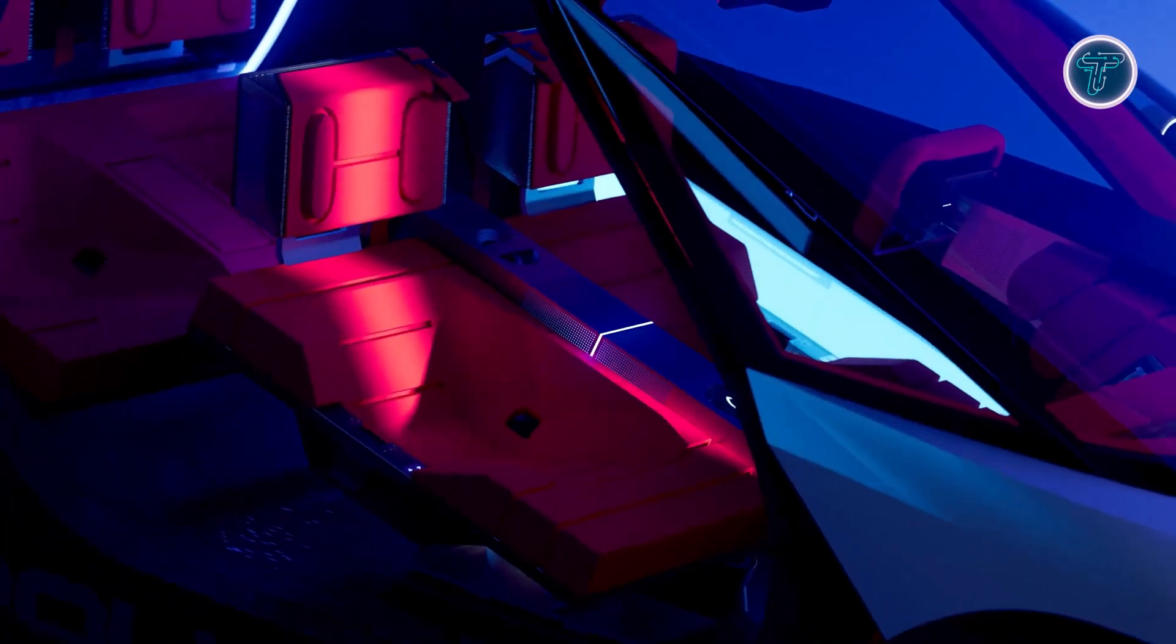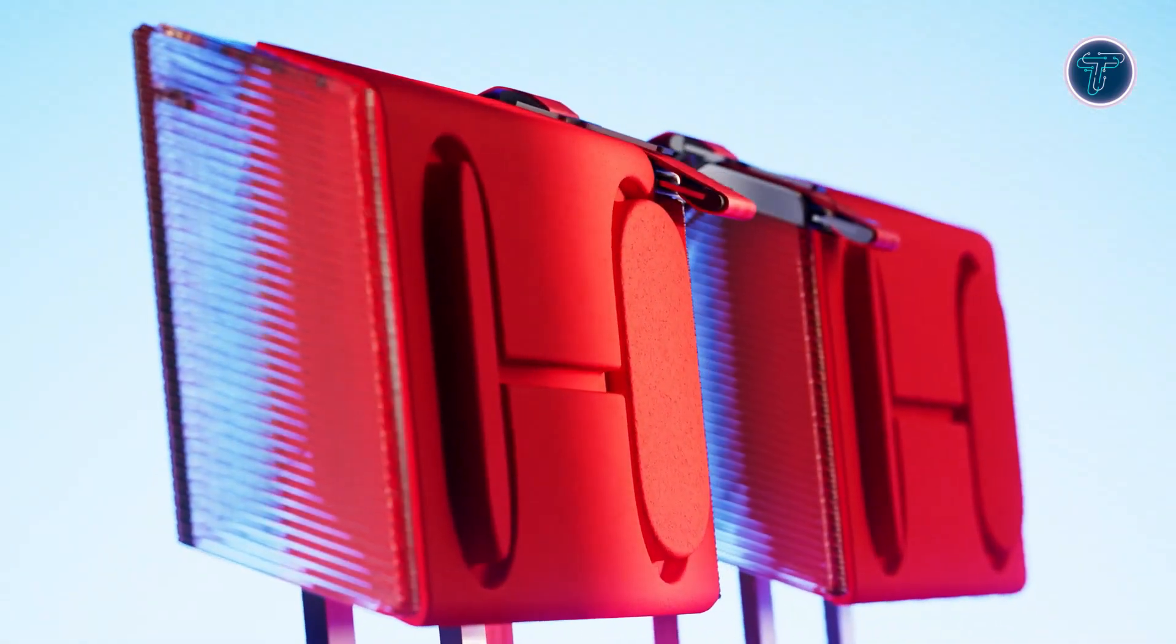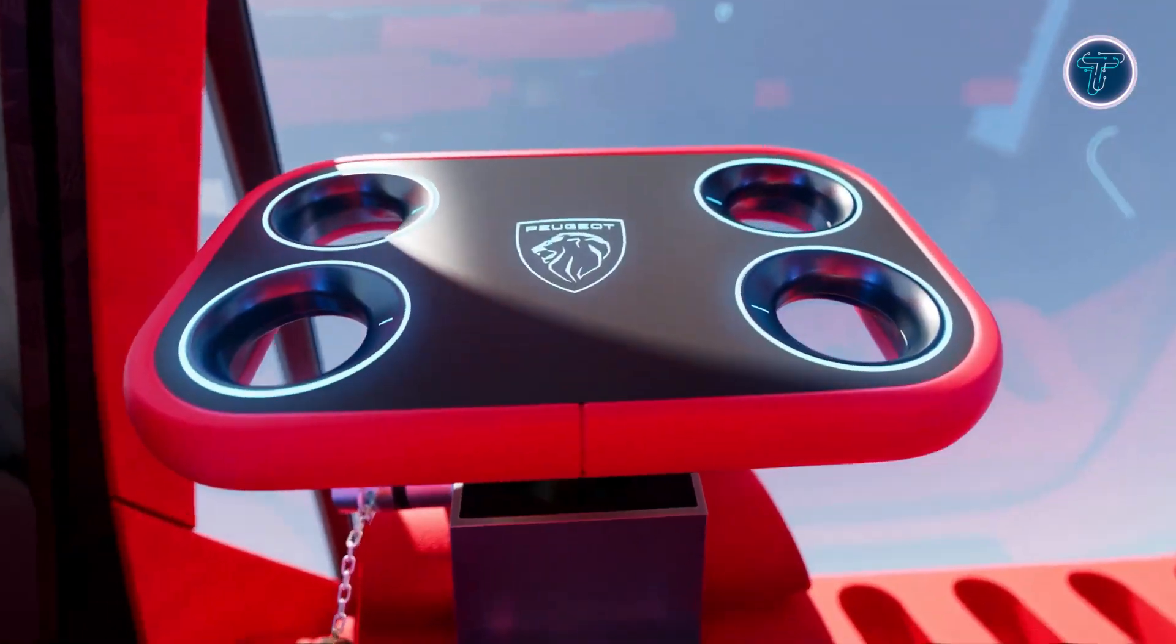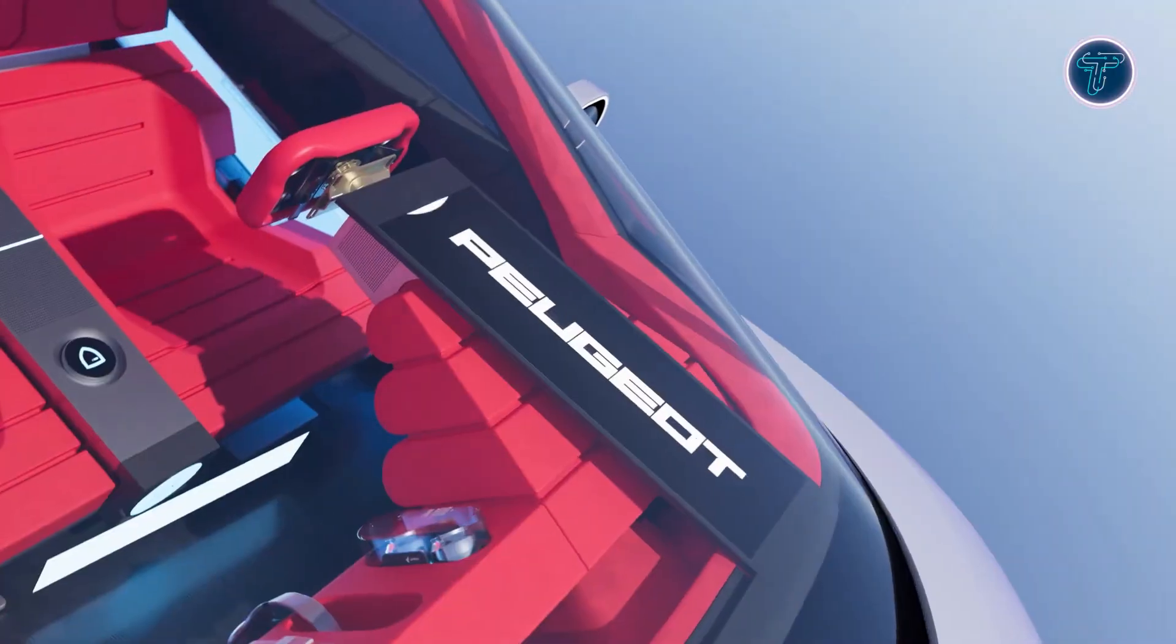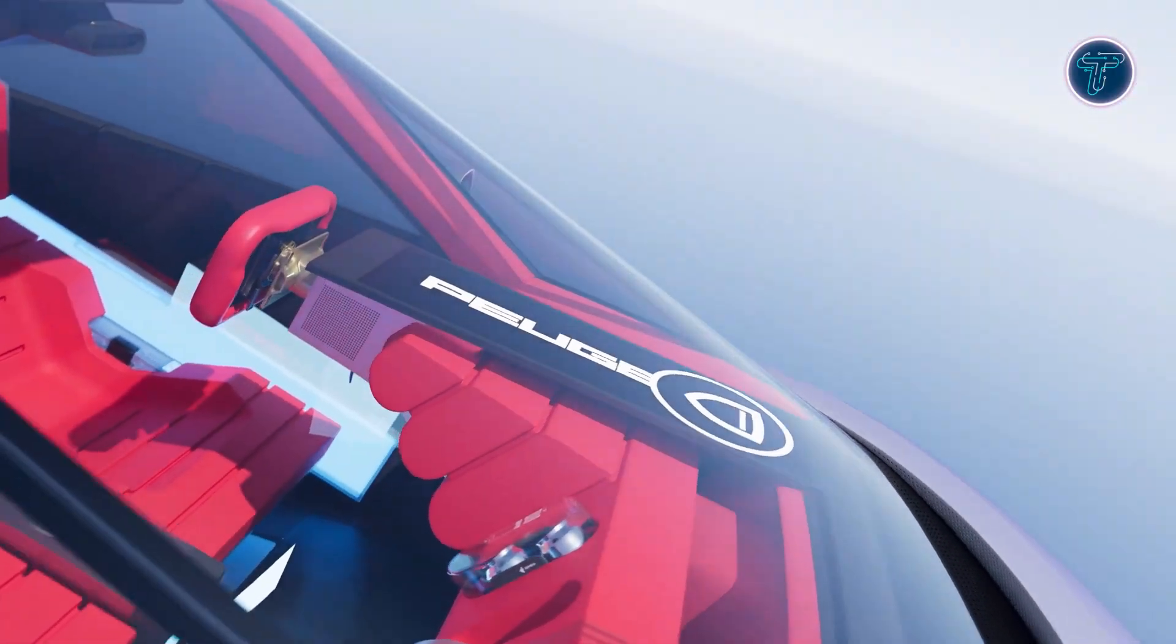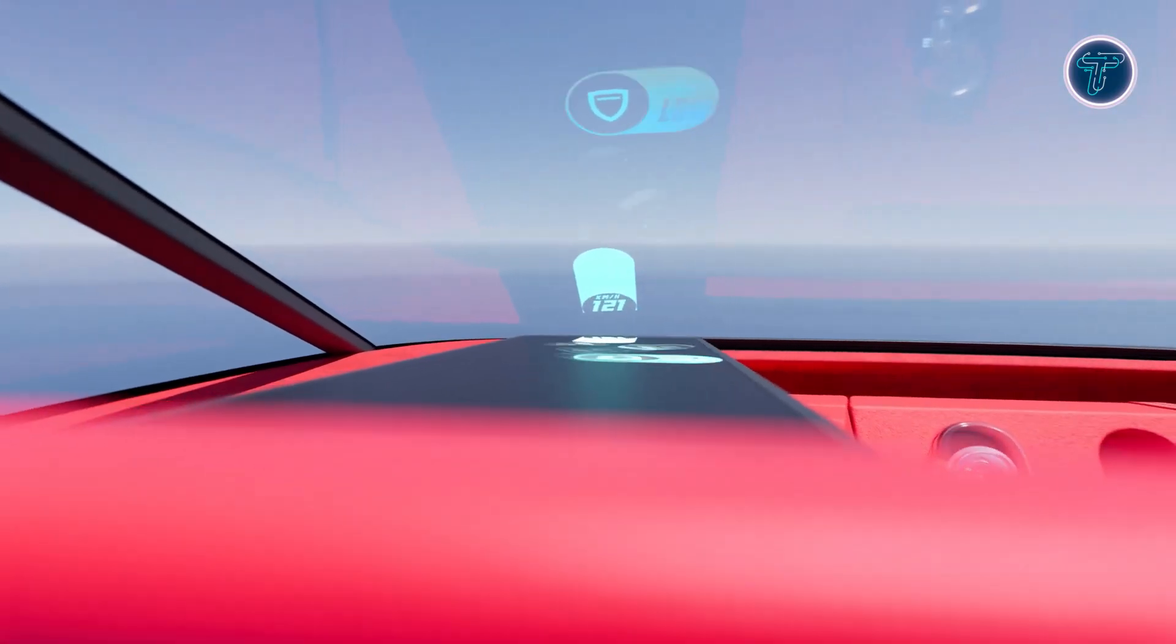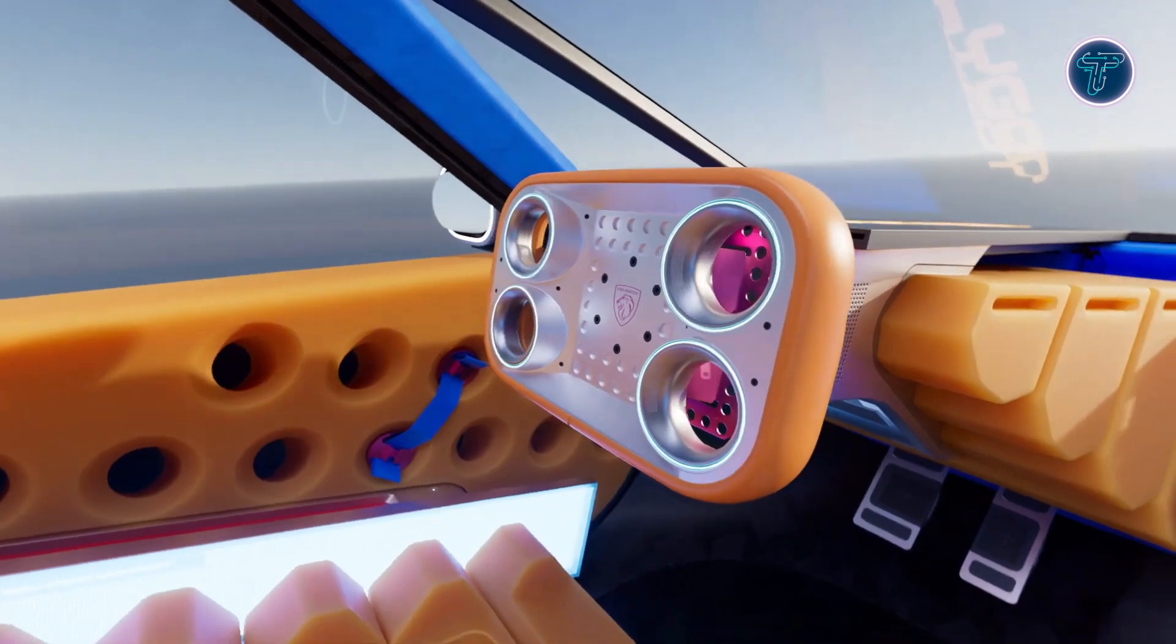Inside, Peugeot pushes even further, replacing the traditional dashboard with a full-width projection system that creates an immersive digital cockpit. At the center is the brand's new HyperSquare steer-by-wire control, a squared wheel with built-in touchpods that give the driver instant access to key functions without taking their hands away. The cabin also showcases sustainable thinking through recycled materials, 3D-printed seat structures, and modular components that can be swapped or updated easily.